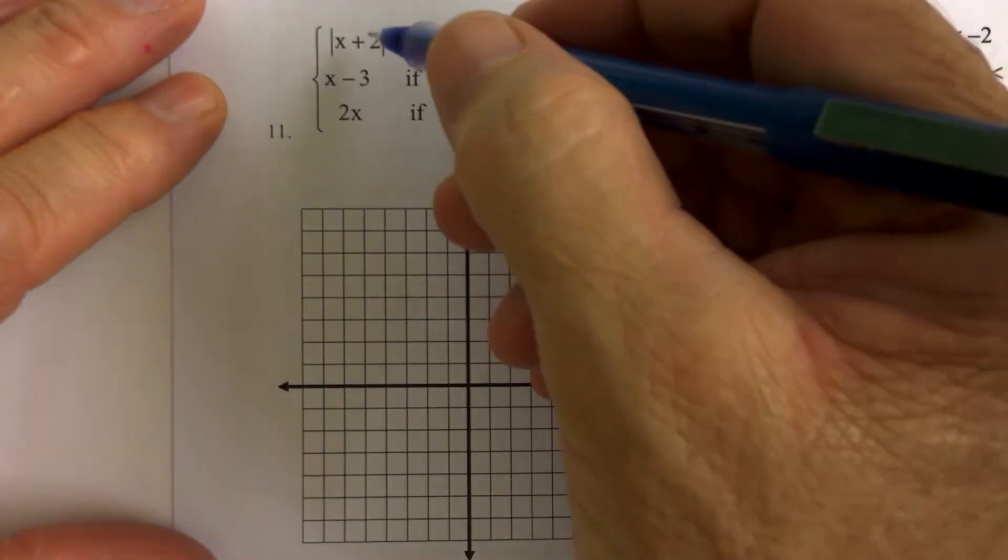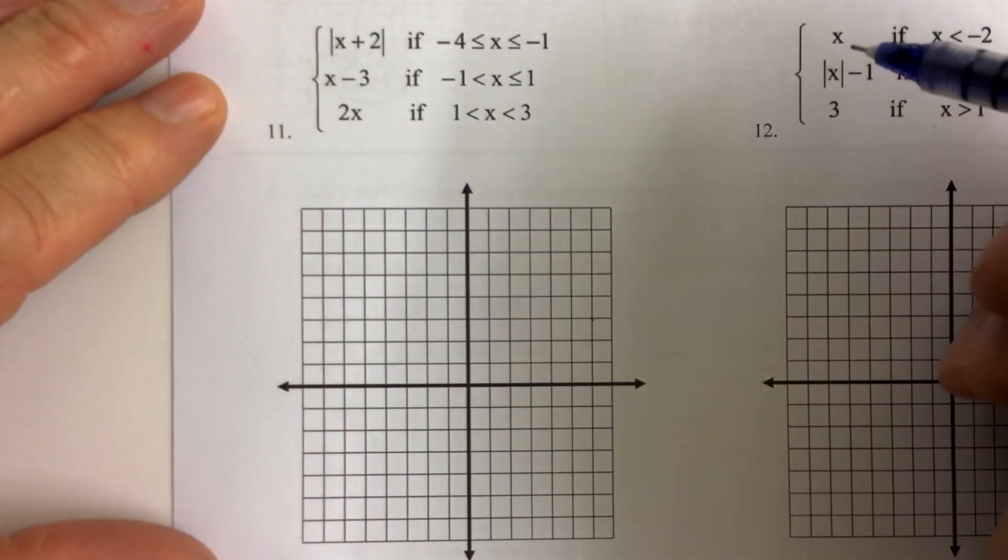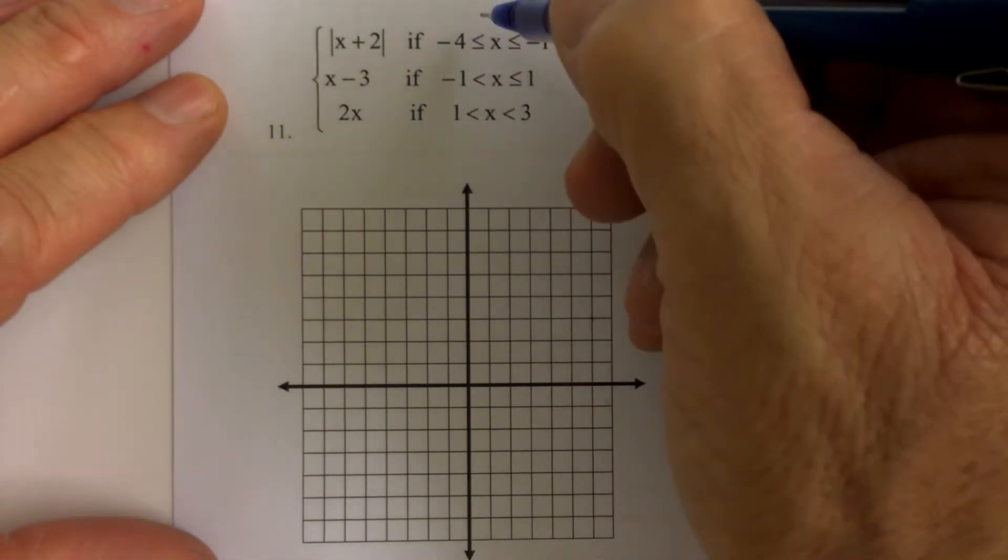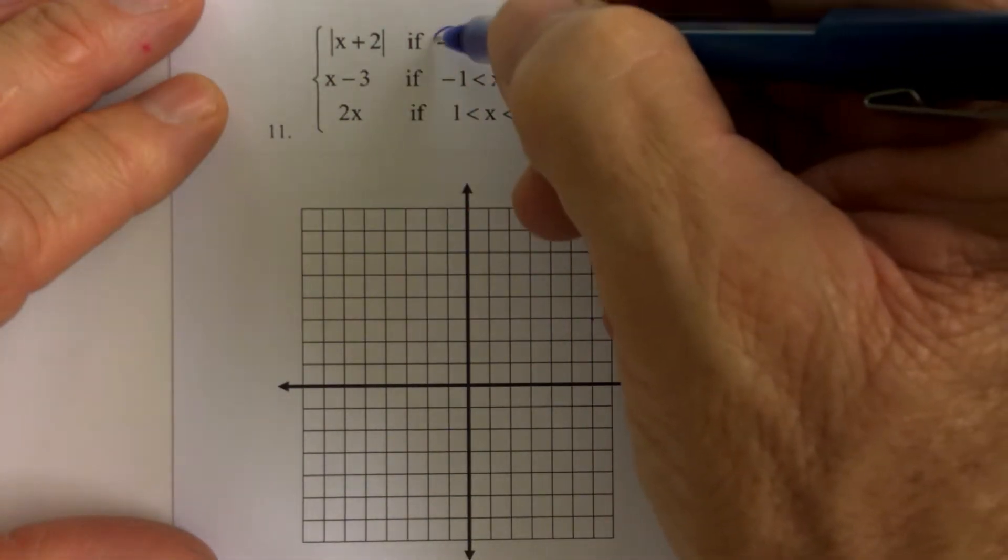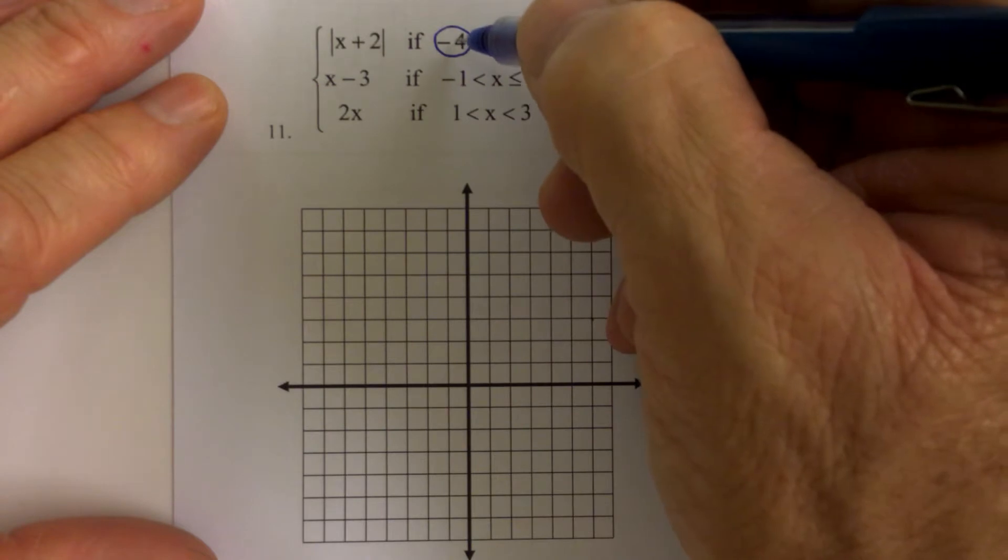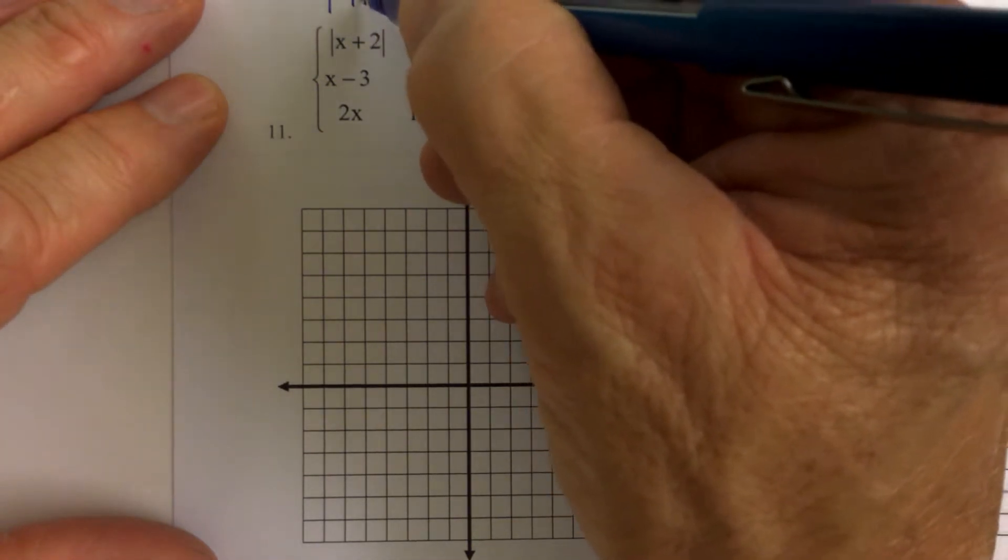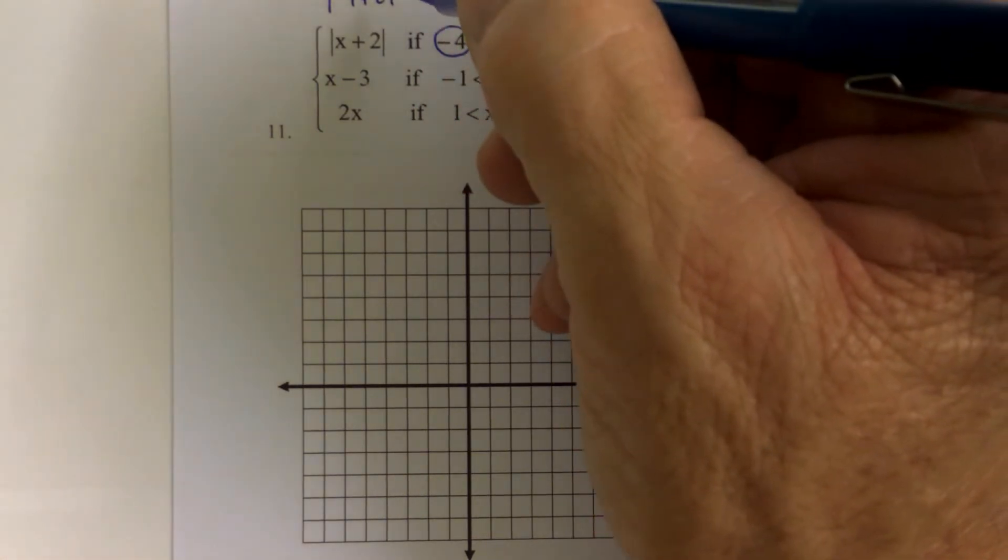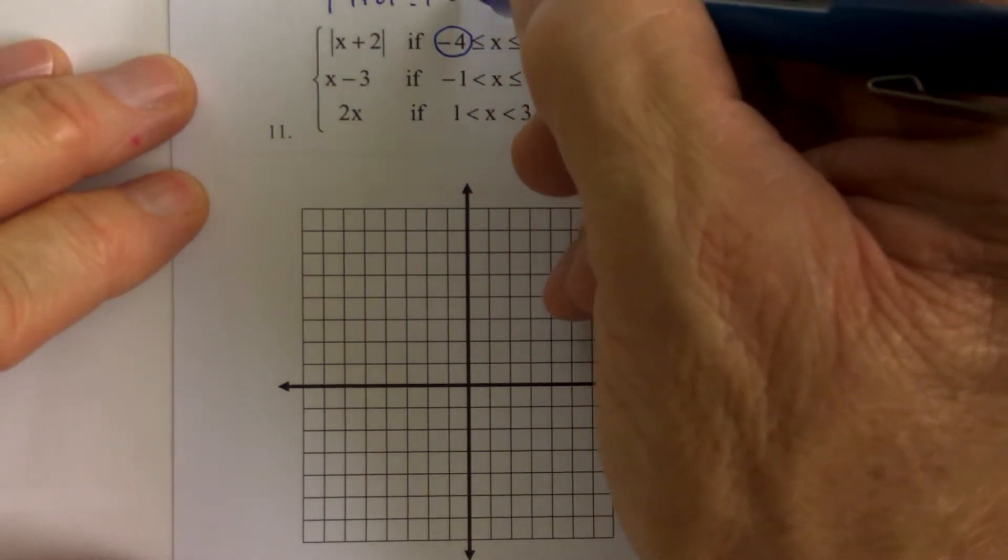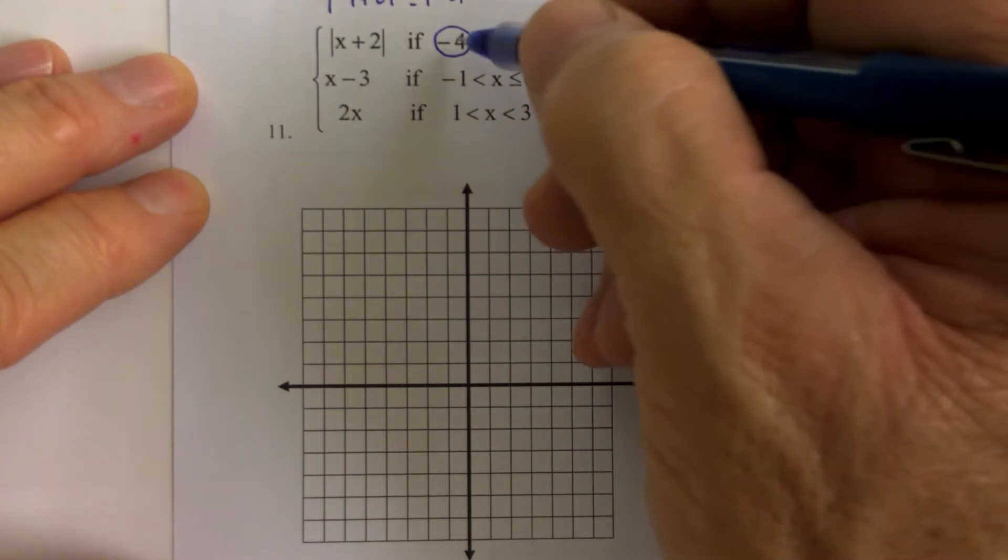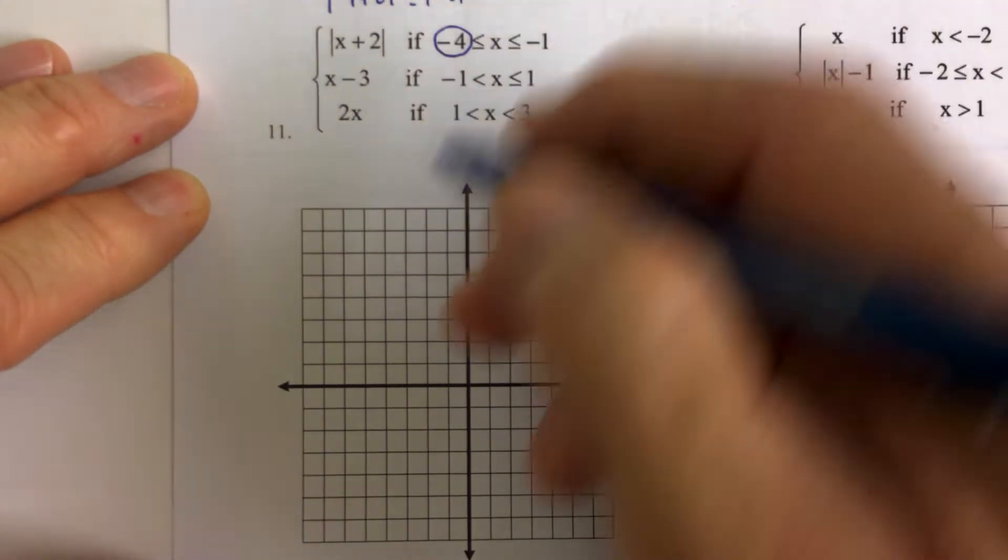Easiest way to graph a piecewise function is if you just plug in the endpoints. Okay, so if you plug in negative 4 for x, we get the absolute value of negative 4 plus 2. And the absolute value of negative 4 plus 2 is the absolute value of negative 2, which is 2. So when x is negative 4, y is 2.